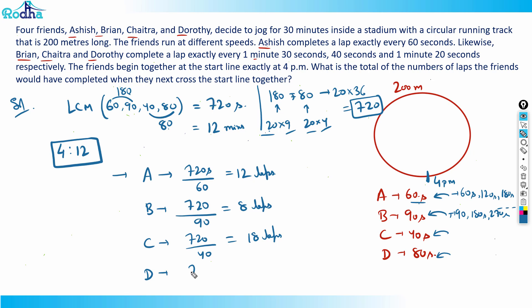D would have taken 720 by 80, that is equal to 9 laps. For example, A is covering one lap in 60 seconds, so after 720 seconds A can take 12 laps. Similarly for B, C, and D.